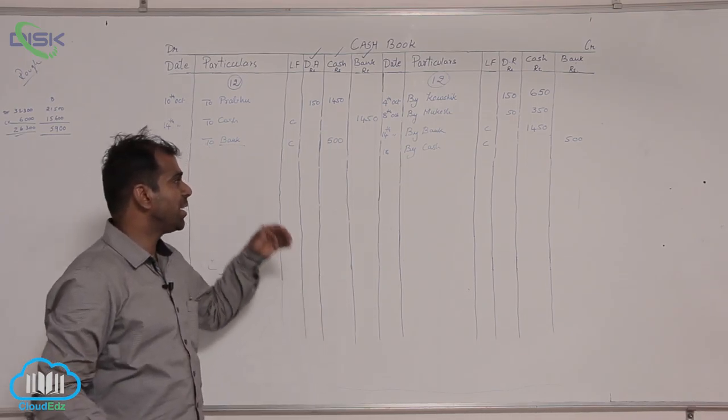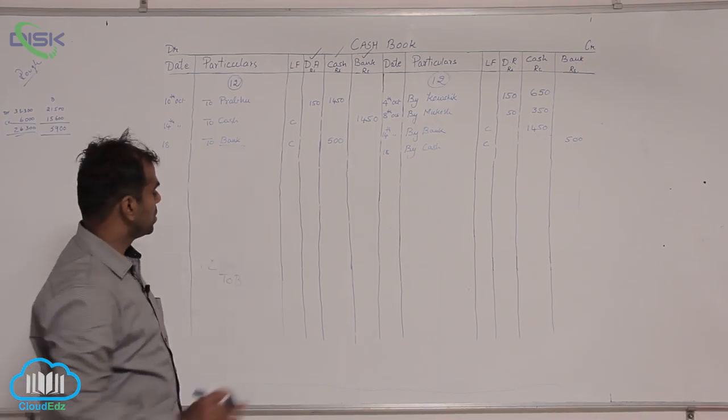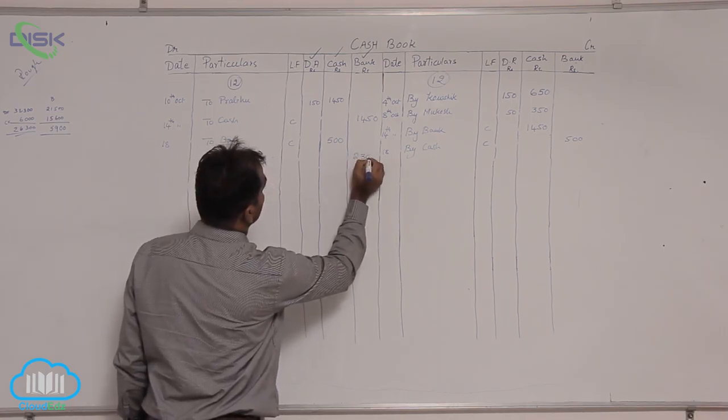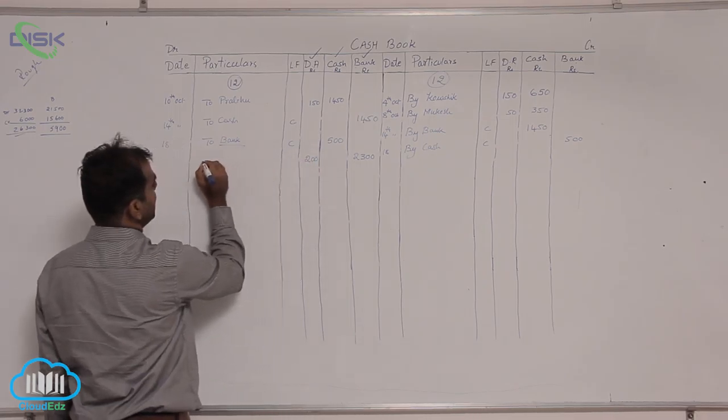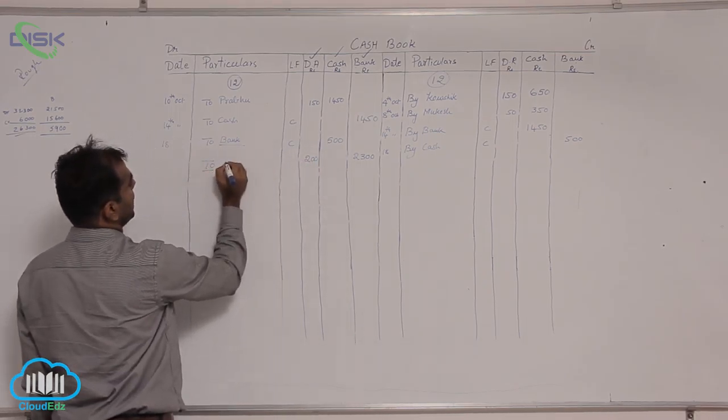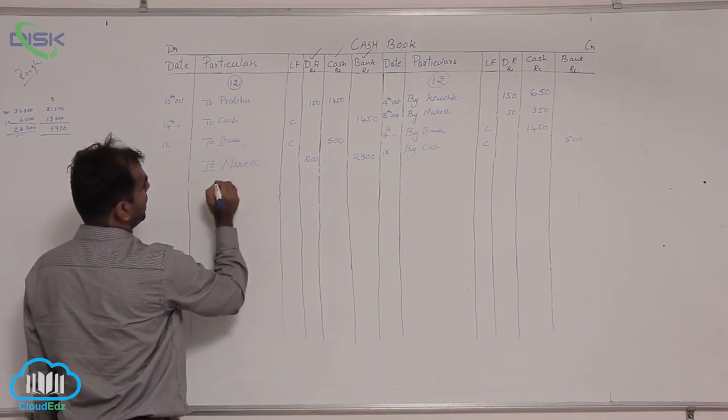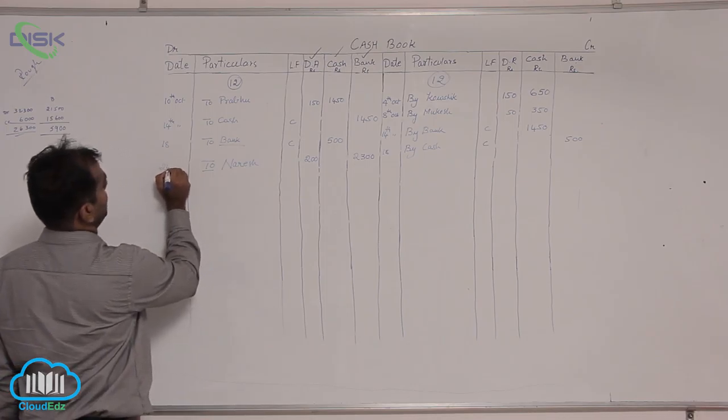Directly we will record this on the debit side in the bank column, the amount 2300 in the bank column on the debit side, 200 discount given to him in discount allowed column, to the name of Naresh in particulars column and the date in date column which is 24th.